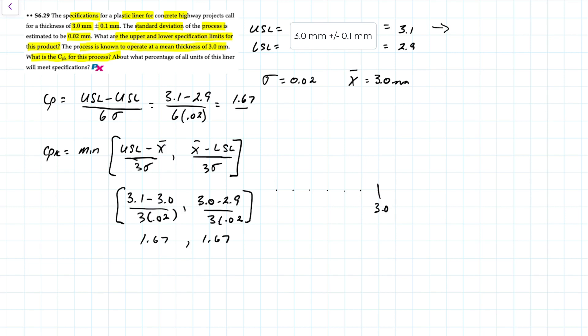If you look at the upper specification limit first of 3.1, which is plus 0.1 from the mean, and if we divide that by the standard deviation, that means the upper specification is about five standard deviations, and the lower specification would be about here. So this is what our base looks like.